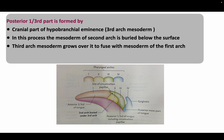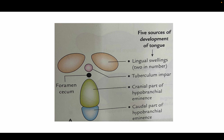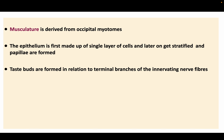There are five sources contributing to the development of the tongue: the two lingual swellings, the tuberculum impar, the foramen cecum portion, the cranial part of the hypobranchial eminence, and the caudal part of the hypobranchial eminence. The musculature is derived from occipital myotomes. The epithelium is first made up of a single layer of cells and later gets stratified, and papillae are formed.